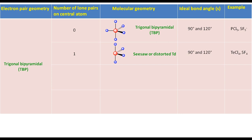For a molecule with trigonal bipyramidal electron pair geometry having two lone pairs on the central atom, we will put the lone pairs on the equatorial position because the number of electron pairs is odd. Ignoring the lone pairs will result in T-shaped molecular geometry. The ideal bond angle is 90 degrees. ClF3 and XeF3+ are examples of this type of molecule.